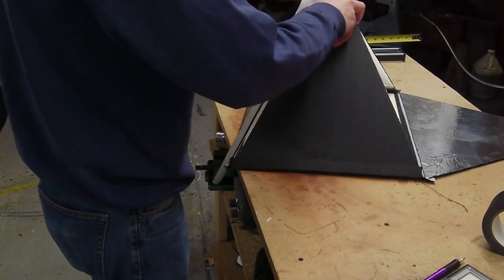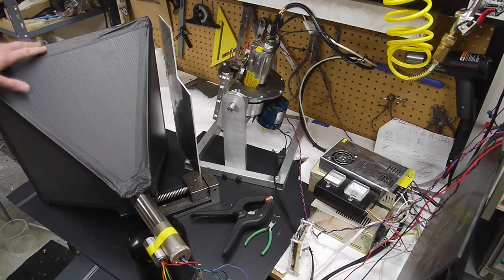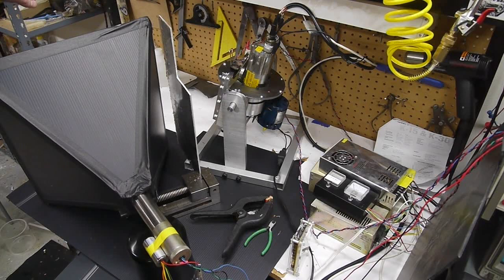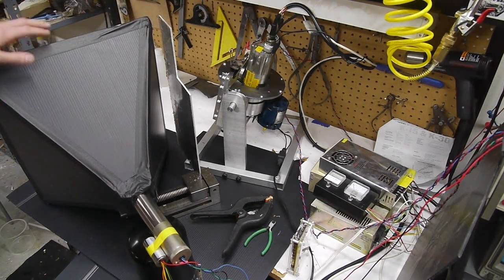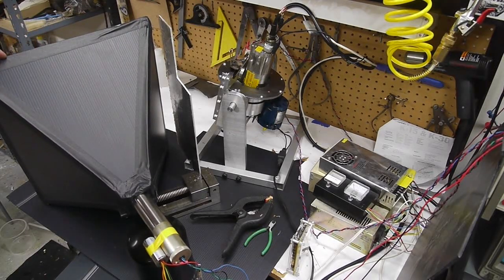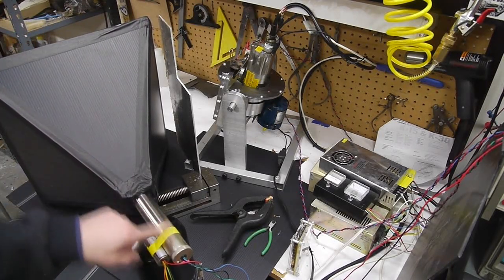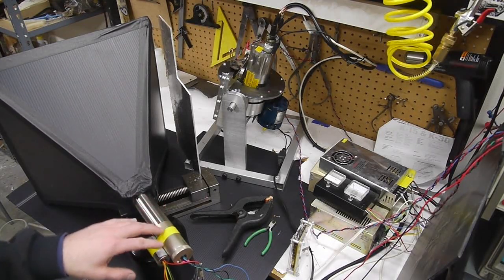And then I have a photomultiplier tube here that detects the light from the phosphor screen. So what happens is the X-rays come out of the tube, hit the object, backscatter, hit the screen here which turns into a very dim light source, and the light source is collected by this photomultiplier tube, which is really just a very sensitive photo detector device.